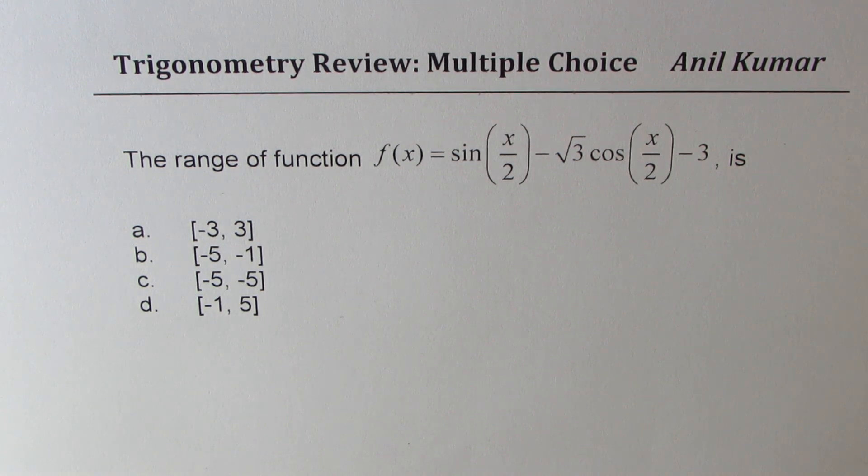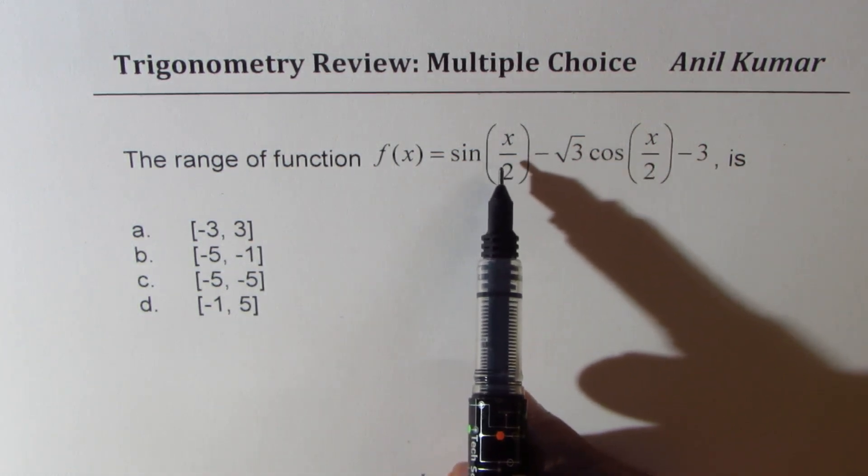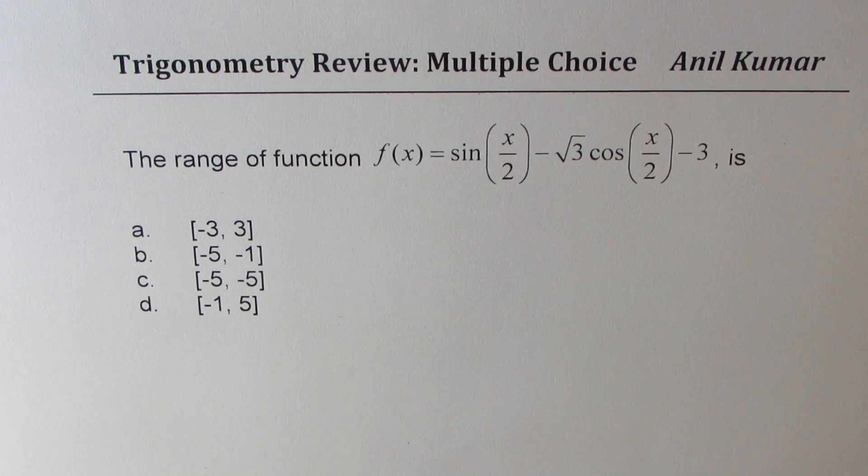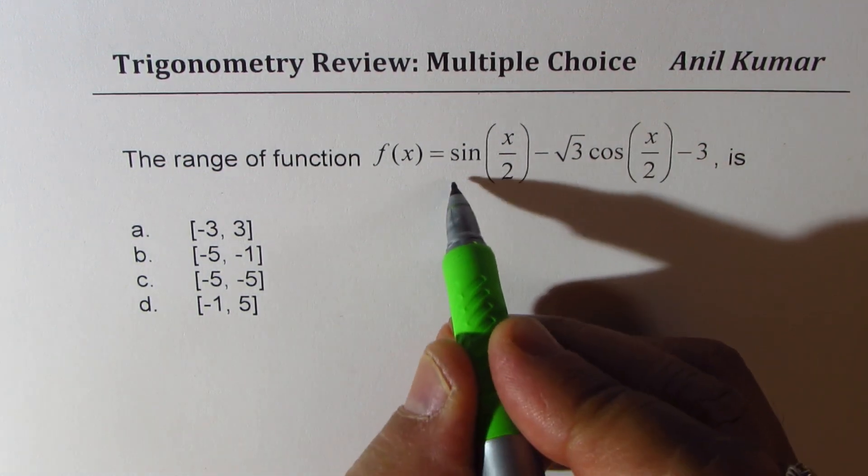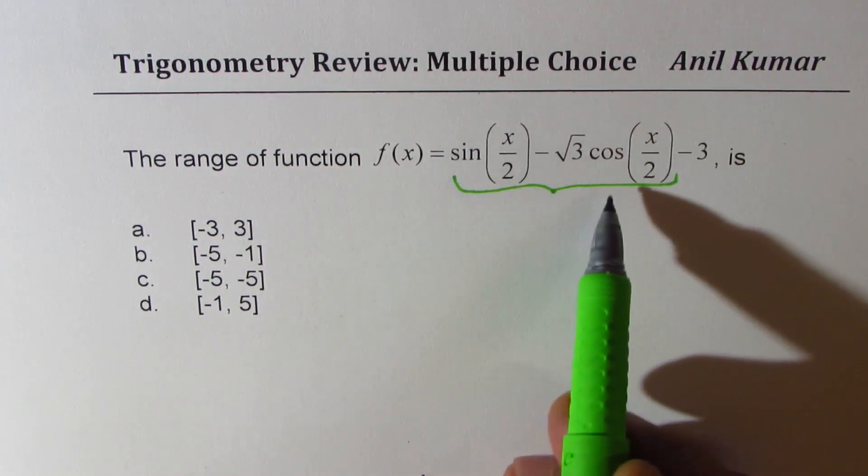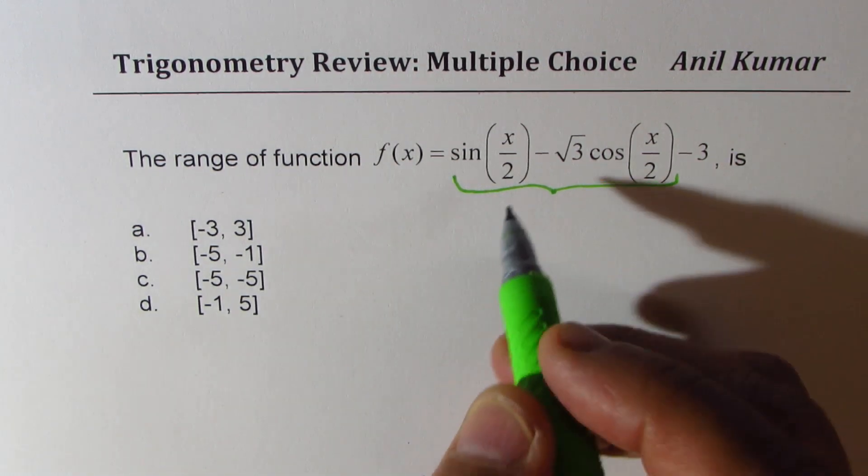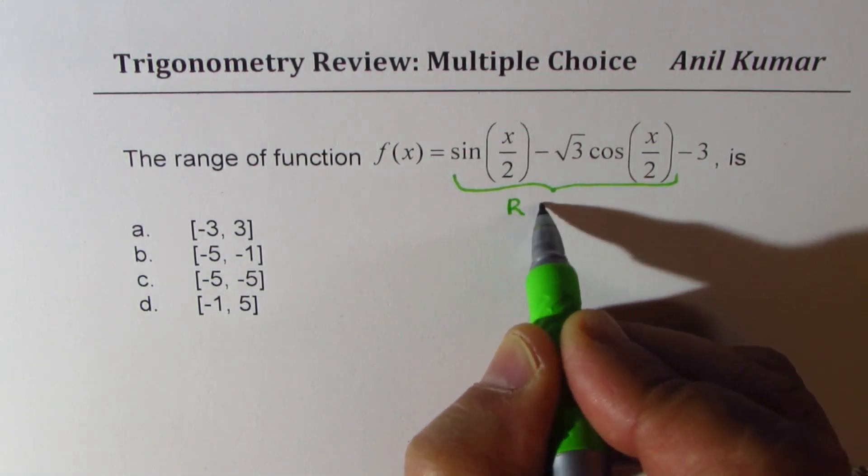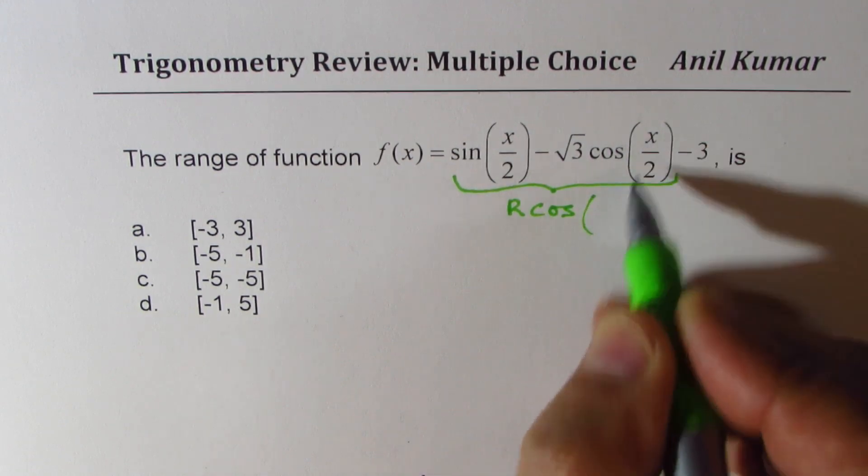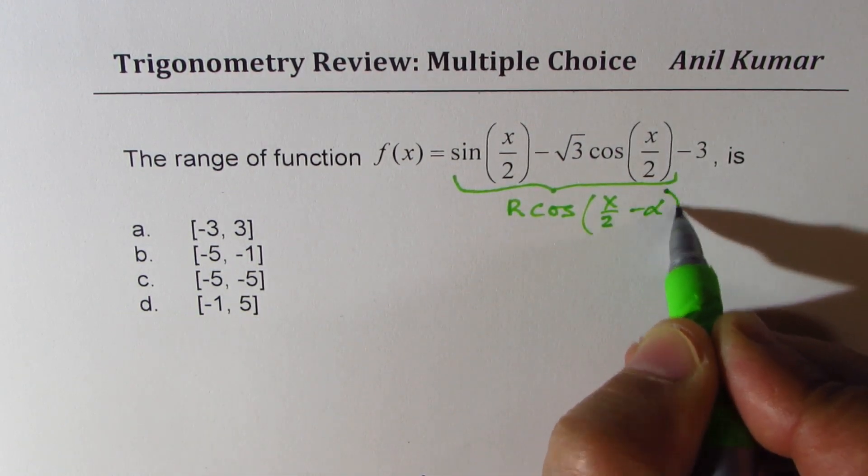Now this is not a very simple question. You need to write this particular equation as one trigonometric ratio to get the right answer. We are going to use the knowledge of combining these two terms into one trigonometric ratio. We could actually write this as R cos, the angle here is x by 2 minus alpha.